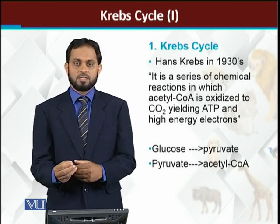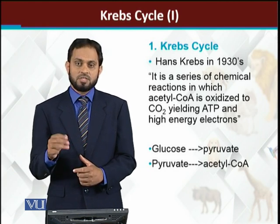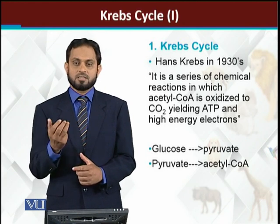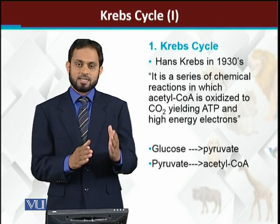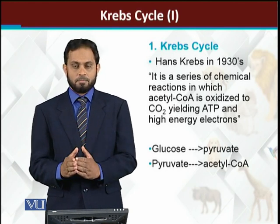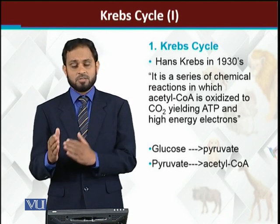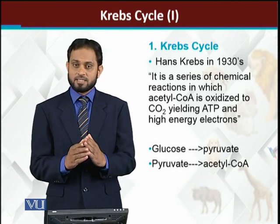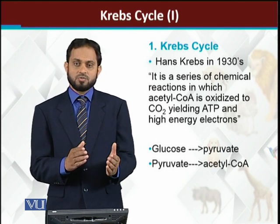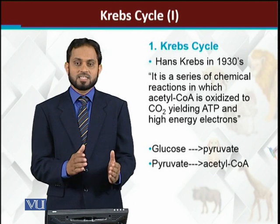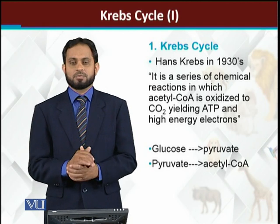So citric acid has three carboxyl groups, hence the name tricarboxylic acid cycle. The sequence is: glucose → pyruvate → acetyl-coenzyme A → Krebs cycle. In some books, pyruvate is shown entering the Krebs cycle, meaning pyruvate is first converted into acetyl-coenzyme A, which then joins the Krebs cycle.